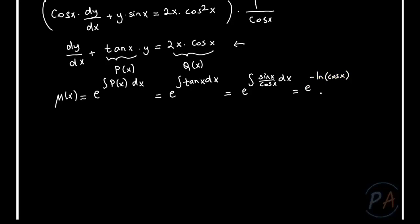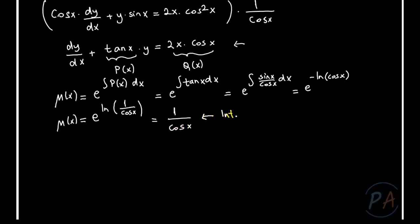That integral equals e^(−ln|cos(x)|). Using the property of exponential functions, I can also write μ(x) = e^(ln(1/cos(x))), which equals 1/cos(x). That is the integrating factor.